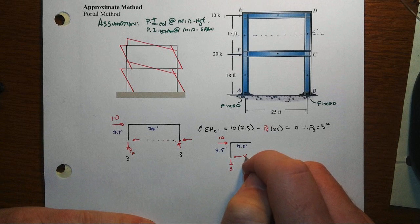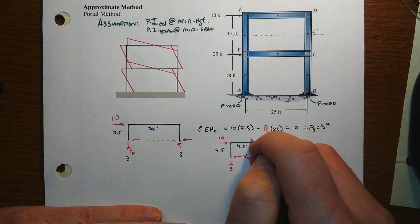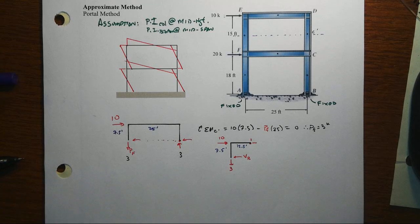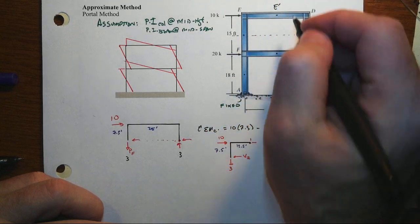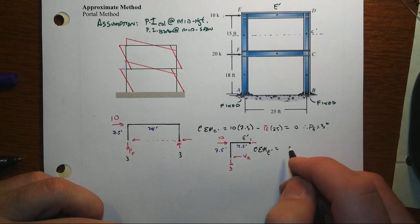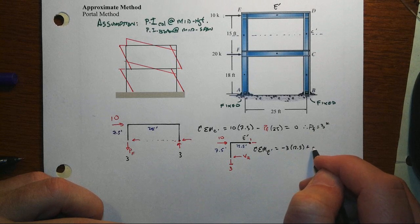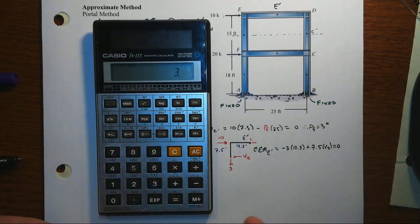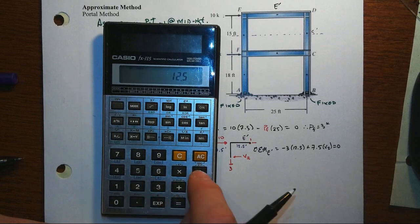I'm going to call it V2 because it's really the second story. And of course, there is a shear and an axial force in the column. We're going to sum moments at that midpoint. Let's call that E prime. So sum moments about E prime. And of course, we don't care about the 10. We get, instead, minus 3 times the 12.5 and then plus the 7.5 times the V2. So that equals 0. I sure hope that V2 turns out to be equal to 5. Let's find out. 3 times 12.5 divided by 7.5. And sure enough, that equals 5.